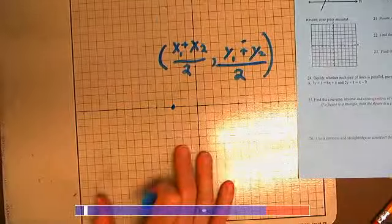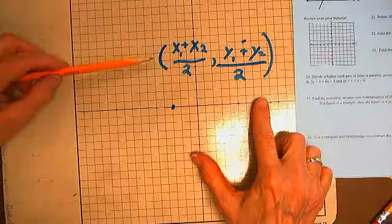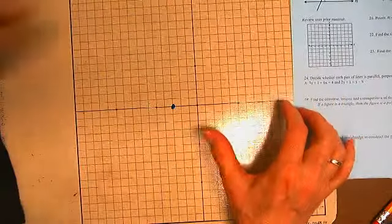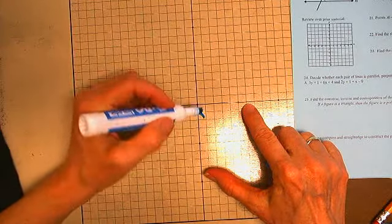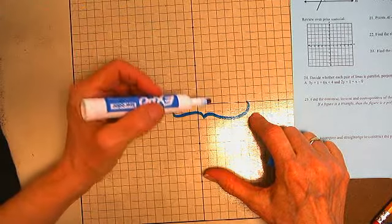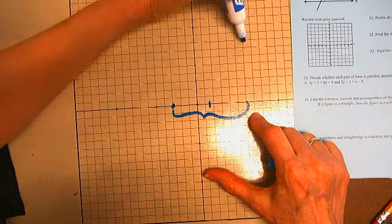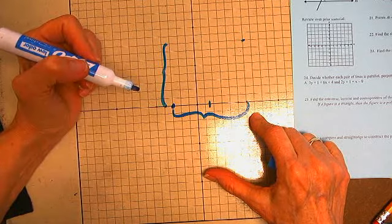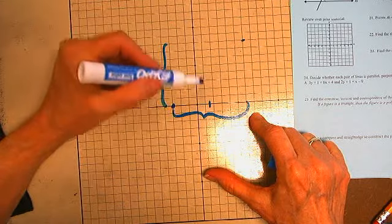That's one way to do this problem — find the average of the coordinate pairs. Another way to do the problem is to find half of the distance between here and here, which will be 4.5, and half of the distance between here and here, which will be 4.